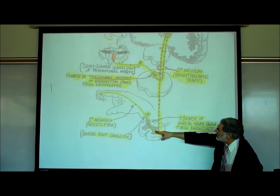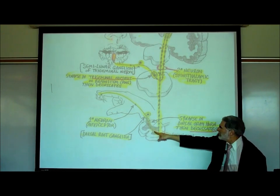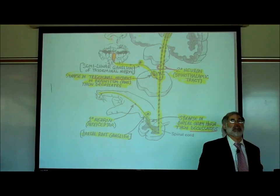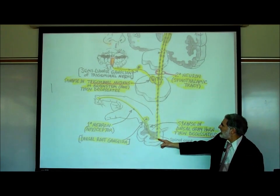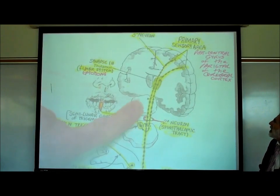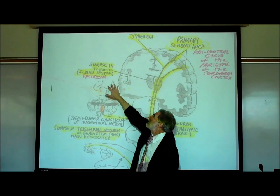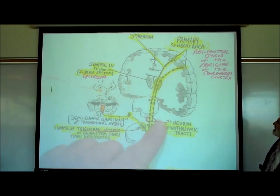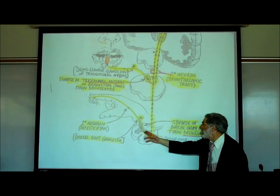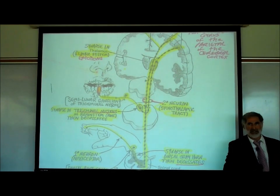This second neuron decussates — crosses to the other side. If this is your right hand, the signal goes to the left side of your brain. It enters the white matter, ascends vertically upward, and synapses in the thalamus. Right near the thalamus is the limbic system, the center of emotions. This second-order neuron sending pain and temperature signals from the spinal cord up to the thalamus is part of the spinothalamic tract.